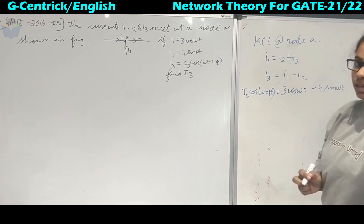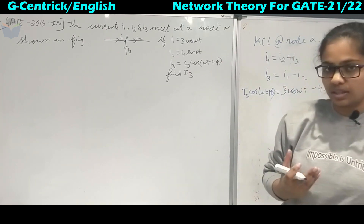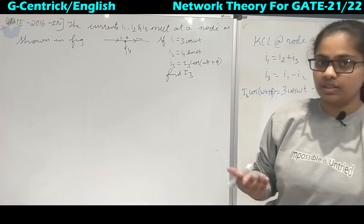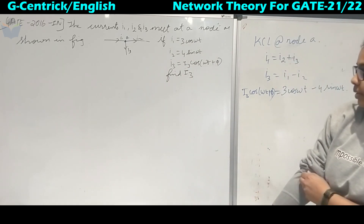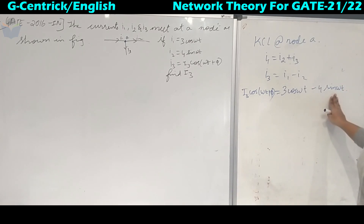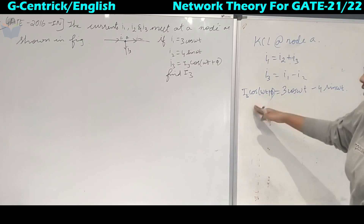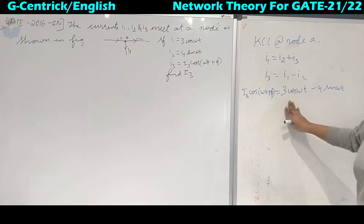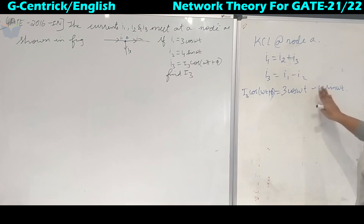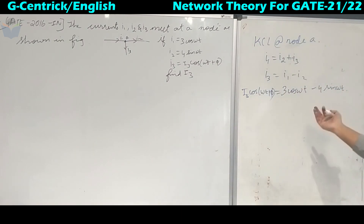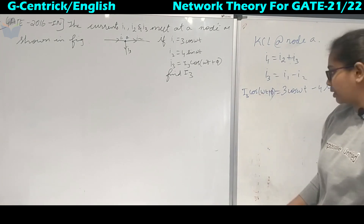To compare two quantities, they must have the same unit. Here we have a cos term and a sin term — they are uneven quantities, so we cannot directly combine them. We must convert the sin term into a cos term, or vice versa. Since both I1 and I3 are in cos, we will convert the 4·sin(ωt) term into a cos term using the conversion formulas.